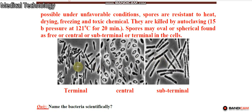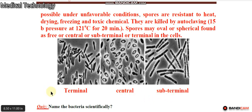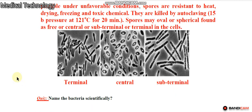The shape and position of the spore inside the bacteria is also an exam question. Spore positions include: terminal (at the end), central (in the middle), and sub-terminal (near the end).